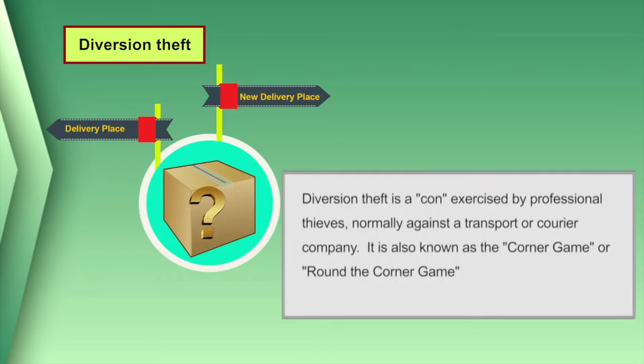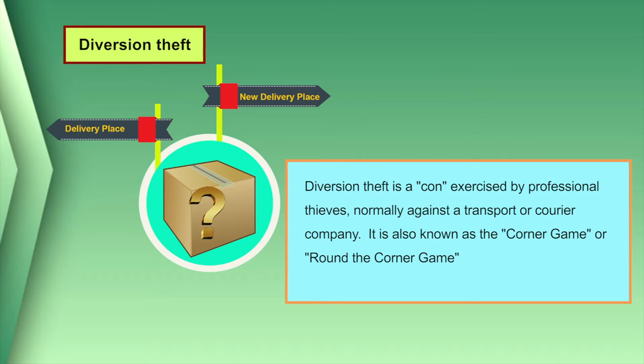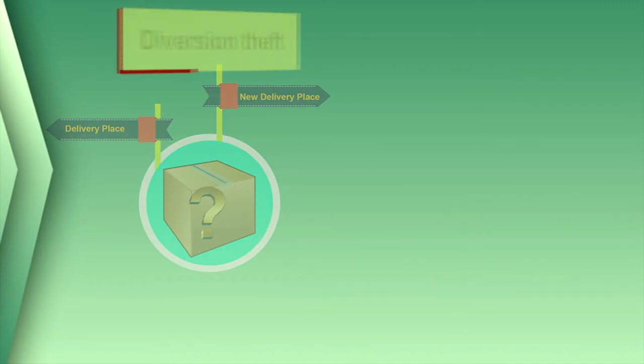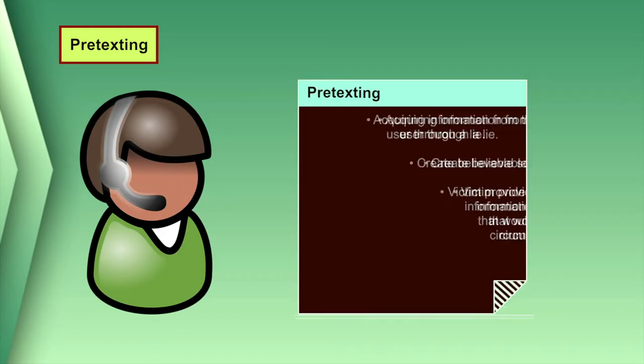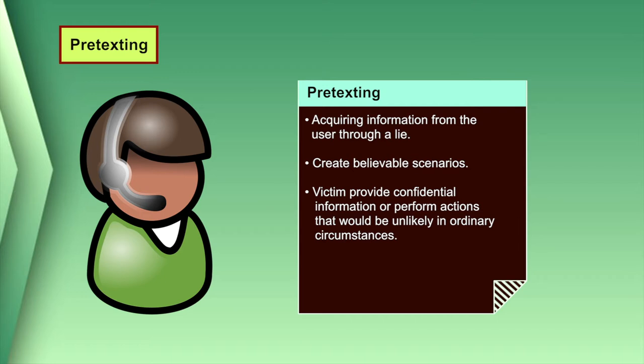The third technique is diversion theft. Used mostly with physical thefts, the purpose is to convince a legitimate delivery person that a package is requested somewhere else, usually around the corner. The fourth technique is pretexting — an act of creating and using an imaginary scenario to engage a target victim in a manner that increases the chance they will reveal information or perform an action that would be unlikely in ordinary circumstances. It is more than a simple lie; be cautious because strangers may try to fool you by creating false situations to collect confidential information.